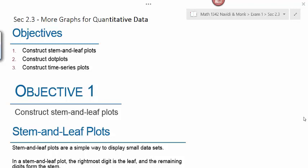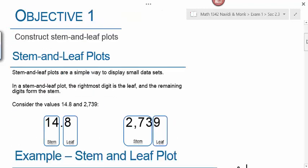Section 2.3 covers more graphs for quantitative data, which just means numerical data. In this section we're going to learn how to construct stem and leaf plots, dot plots, and time series plots. We won't actually be constructing time series plots — we'll just be looking at how to read and interpret them.